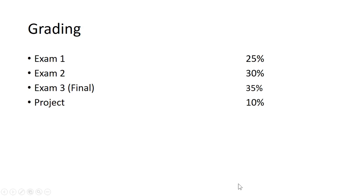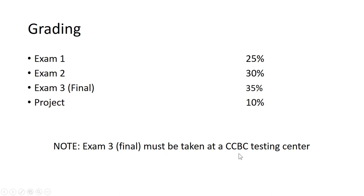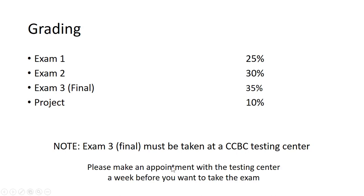Grading is based on four criteria: Exam One is 25% of your grade, Exam Two is 30%, the final exam is 35%, and the project is 10%. Almost all of this course can be done online, except for the final exam, which must be taken at a CCBC testing center. Please remember to make an appointment with the testing center one week — or better yet, two weeks — before you want to take the exam.